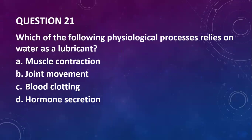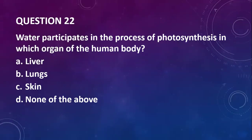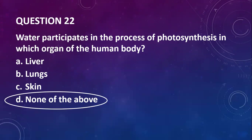Question twenty-one: which physiological process relies on water as a lubricant? You have muscle contraction, joint movement, blood clotting, and hormone secretion. The answer is B — joint movement. Question twenty-two: water participates in the process of photosynthesis in which organ of the human body — the liver, lungs, skin, or none of the above? This is a trick question. Photosynthesis does not occur in the human body; it occurs in plants. So your answer is none of the above.